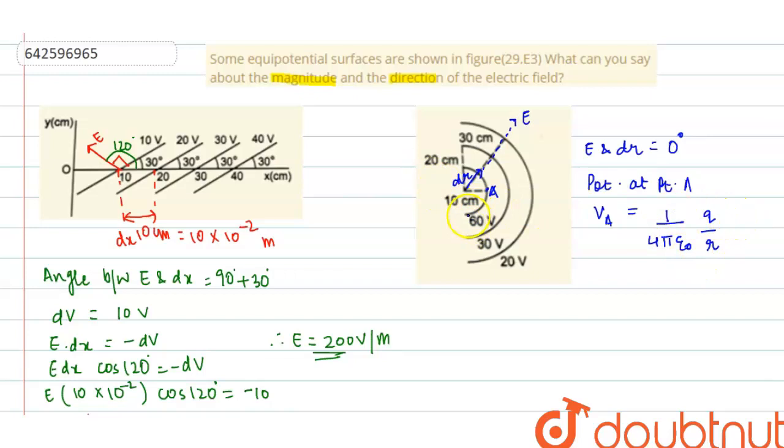Here it is 60 volt, so it's 60. Therefore q by 4 pi epsilon naught is equals to 60 into r.